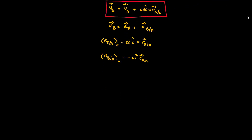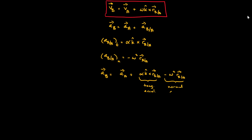The linear acceleration of B is equal to the linear acceleration of A plus the relative acceleration of B with respect to A, which is decomposed into a tangential component and a normal component. This gives us the complete linear acceleration for 2D general planar motion.